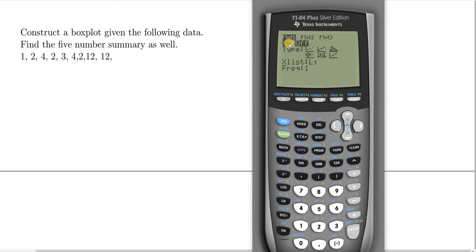You want to make sure to turn the plot on, so go to On and hit Enter. Then press the down arrow key. You want to make sure that your box plot is selected — go to it and press Enter one time. Once you have it selected you should be good to go.